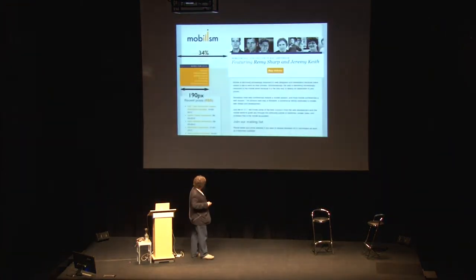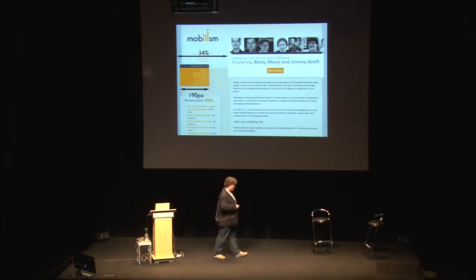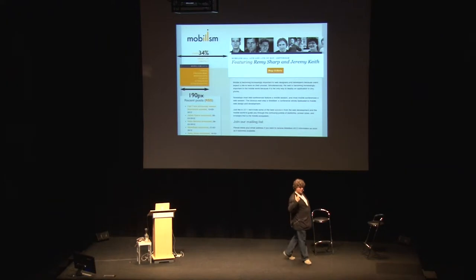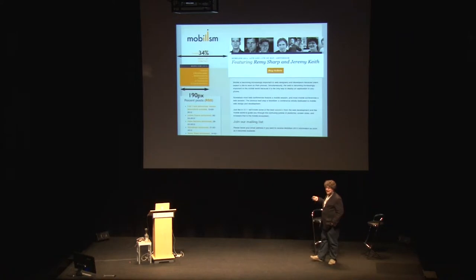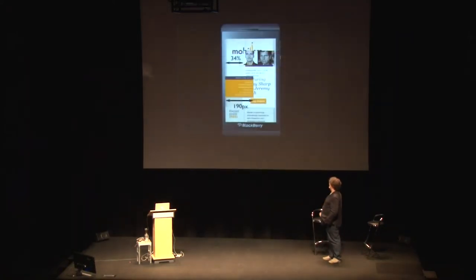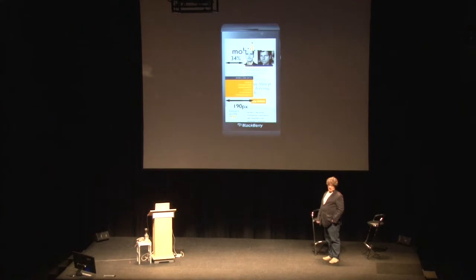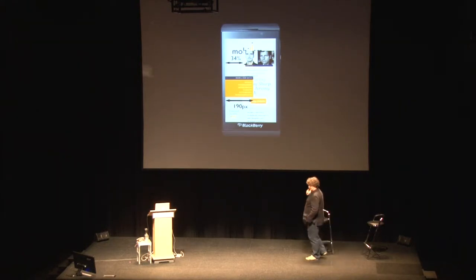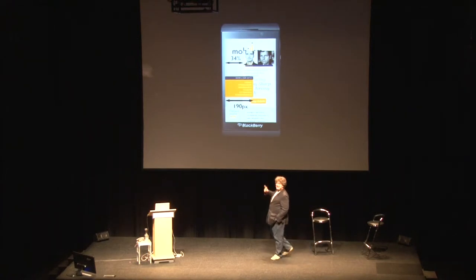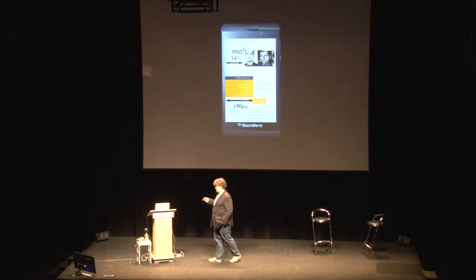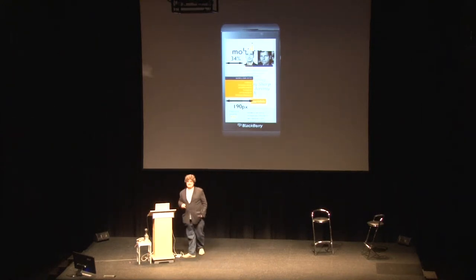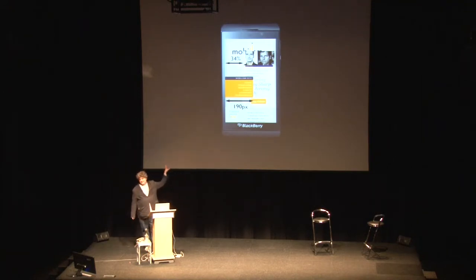So the problem the mobile browser vendors faced was figuring out how to show desktop-optimized websites on a mobile device. The fundamental problem was that they could not literally copy the desktop viewport concept to mobile because the mobile screen is too small. Here again is our website — 34%, 190 pixels. If we show this website on a mobile phone that does exactly the same as the desktop browser, you get something ugly. Technically it's all correct — this is 34% of the screen, this is still 190 pixels wide — but this is absolutely not what we want.